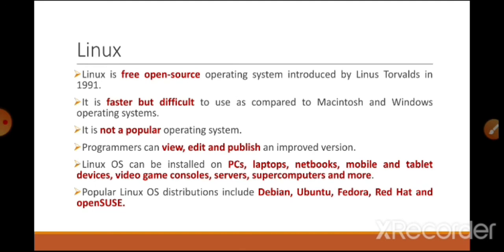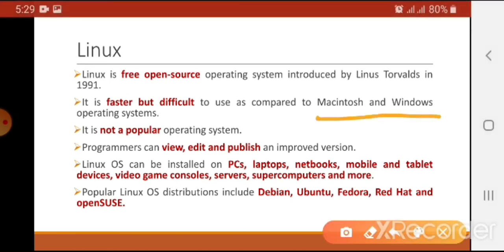The second operating system with a graphical user interface is Linux. It is a free open-source operating system, meaning its code is available and any programmer can make amendments and upload an improved version. It is faster but more difficult to use compared to Macintosh and Windows. It is less popular among general users, but Linux can be installed on PCs, laptops, netbooks, mobiles, and tablet devices.